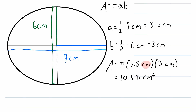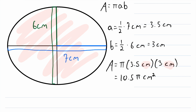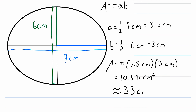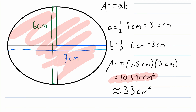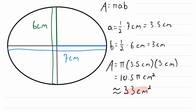Because remember, we have centimeters times centimeters, and area is a square unit, so we know this is centimeters squared. And if you like approximations, this is equal to about 33 centimeters squared. So 10.5 pi centimeters squared is the area of this ellipse, which is approximately 33 centimeters squared.